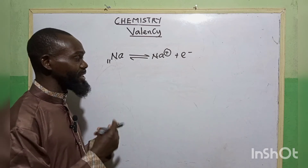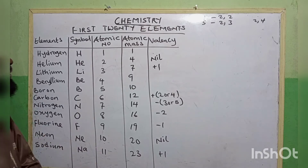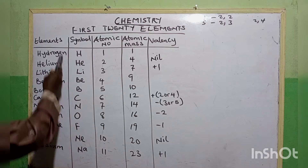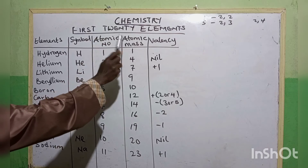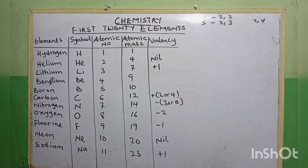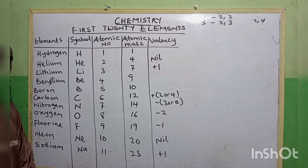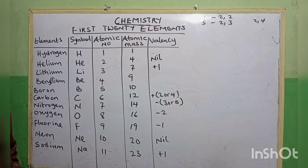We will now look at the first 20 elements and their valencies. The table shows the element name, symbol, atomic number, atomic mass or mass number, and then the valency. There are some elements whose valency is not written, just because they are not easily determined — they can be determined when we get to calculation of oxidation number. Now let's look at those that have their valency readily available.